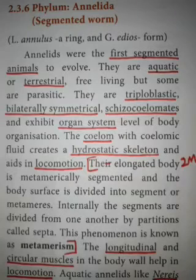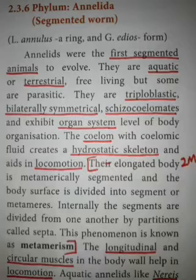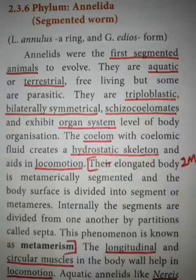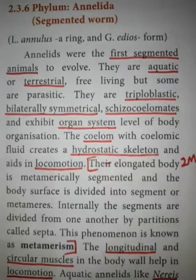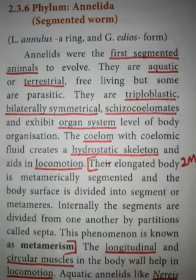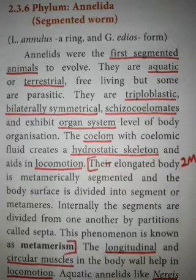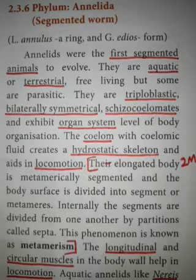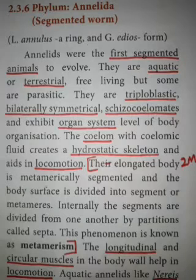Annelida is the first group in which we can see truly segmented animals. So far, the animals we studied were unsegmented or pseudo-segmented. This is the first group of animals that are truly segmented.